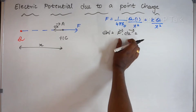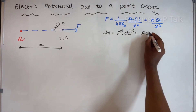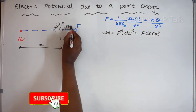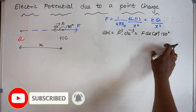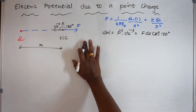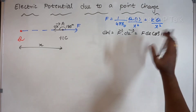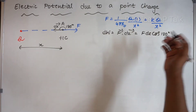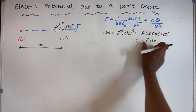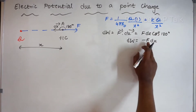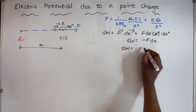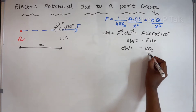A dot B can be written as AB cosθ. The angle between the force and displacement is 180 degrees. cos(180°) is in the second quadrant, which gives a negative value: cos(180°) = −1. Therefore, dW = −F dx = −Kq/x² dx. This is the small amount of work done in bringing the charge through a small displacement dx.